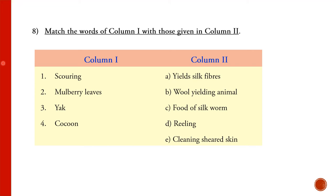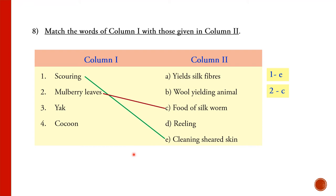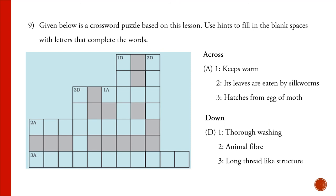Match the following: scouring matches with 'cleaning sheared skin'; mulberry leaves is the food of silkworm; yak is a wool-yielding animal; and cocoon yields silk fibers — you get silk fibers from the cocoon of the silkworm.